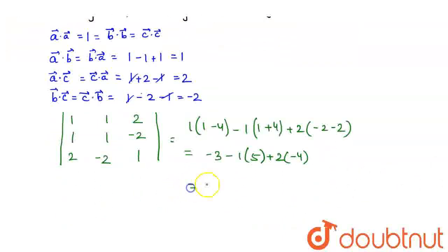So if we solve this further, we get minus 3 minus 5 minus 8. This is in modulus sign, so this would be 16. Hence, the final answer is 16.